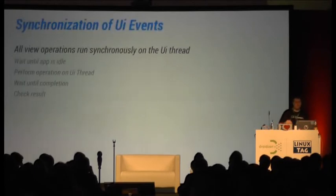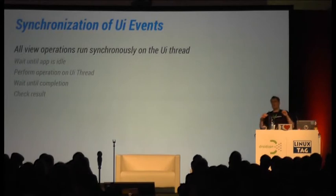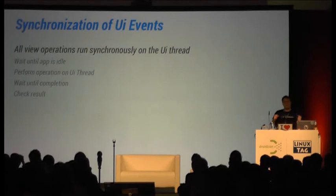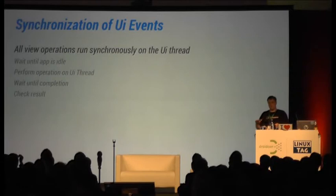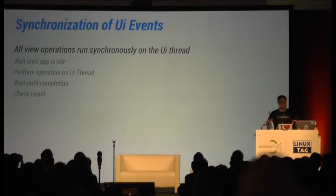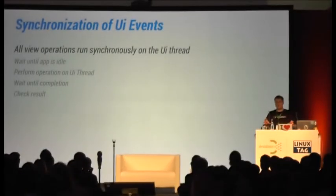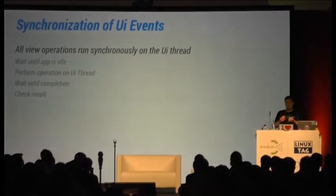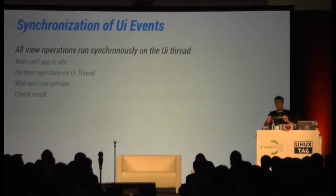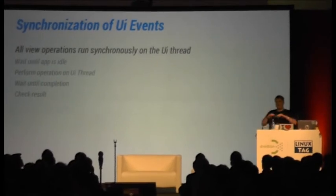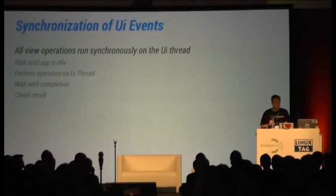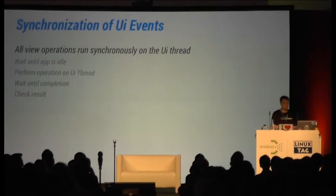The other thing I mentioned was making tests more reliable and less flaky. Something Espresso does to make this possible is synchronize everything. If you have a UI event, we wait until the app is idle, then execute the operation, and then wait until it completes before moving on in the test.